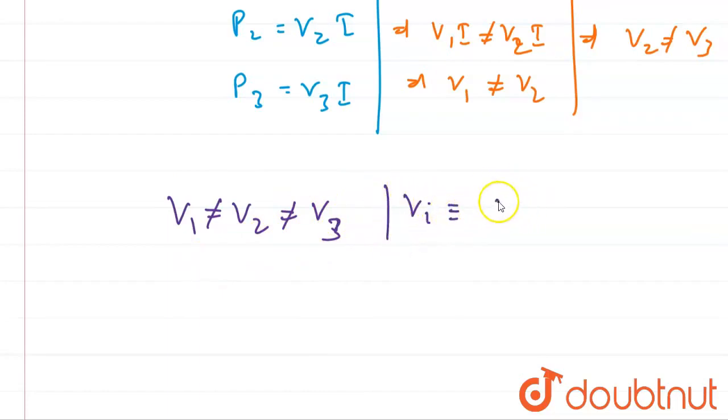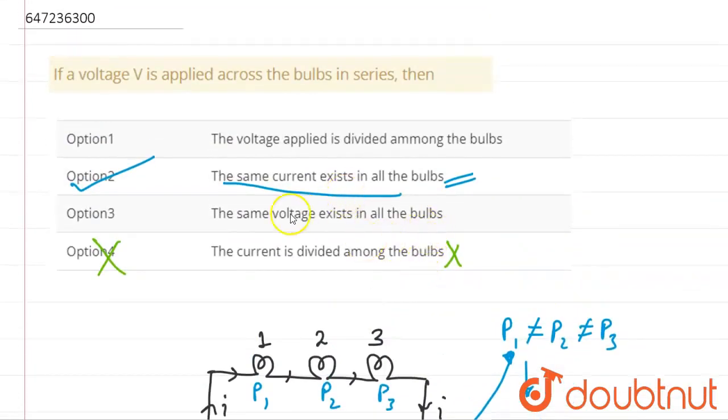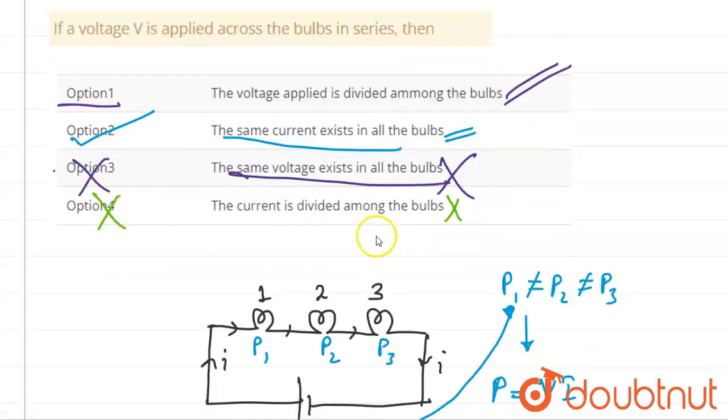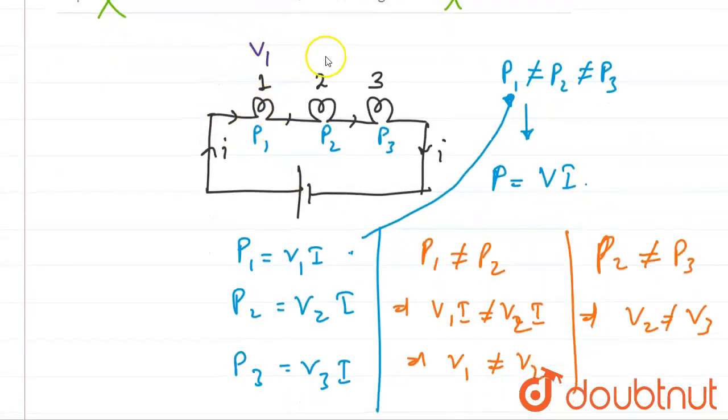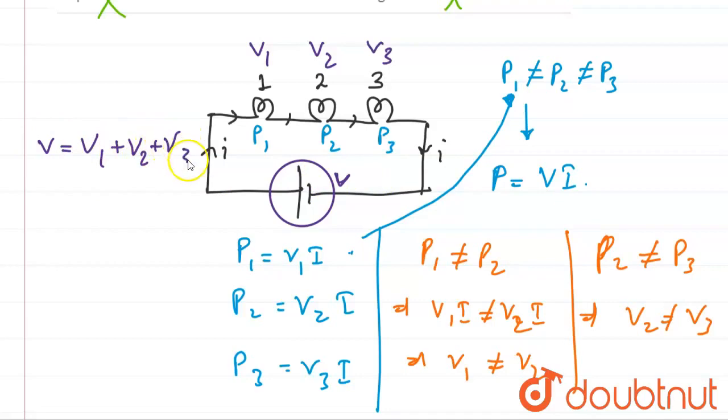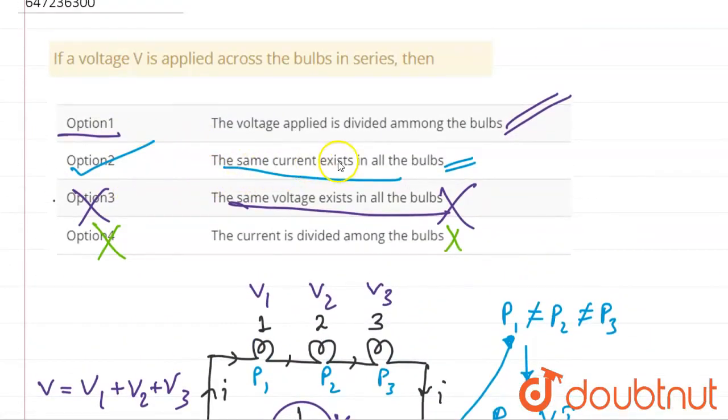Where V1, V2, V3 are the voltages across each bulb. The total voltage V = V1 + V2 + V3. This confirms option 1: the voltage applied is divided among the bulbs. This is right.